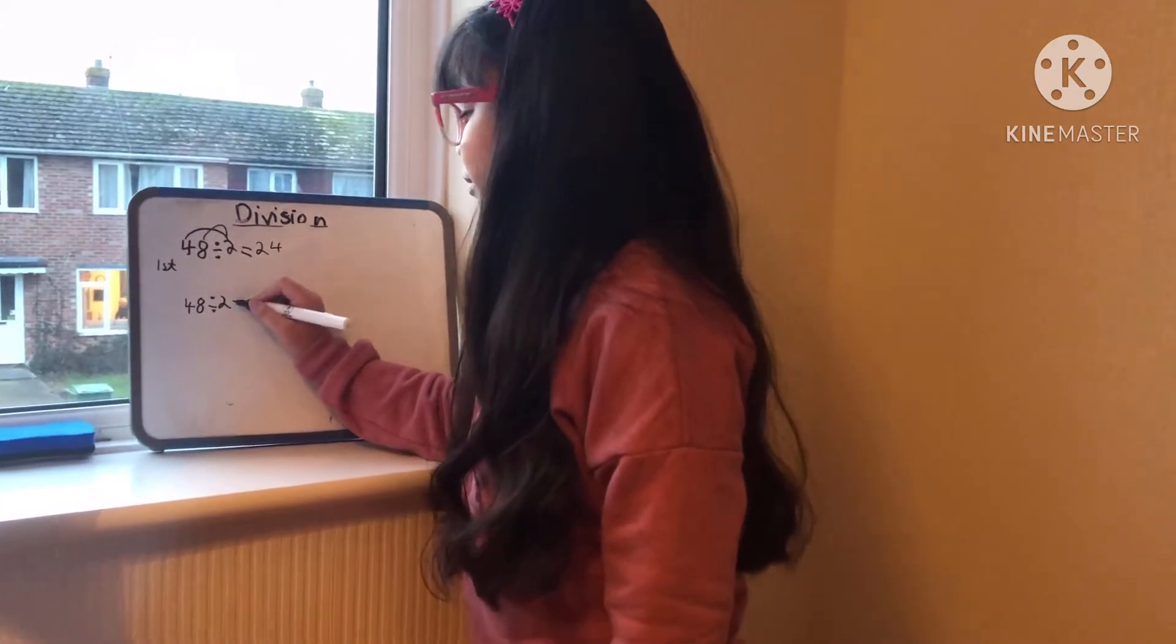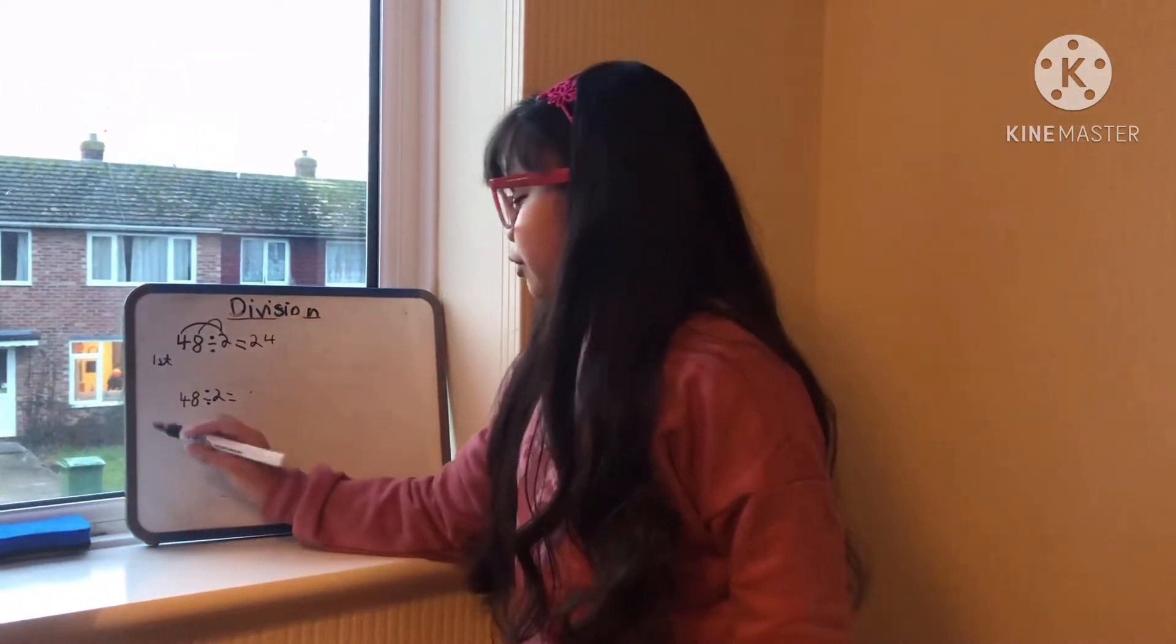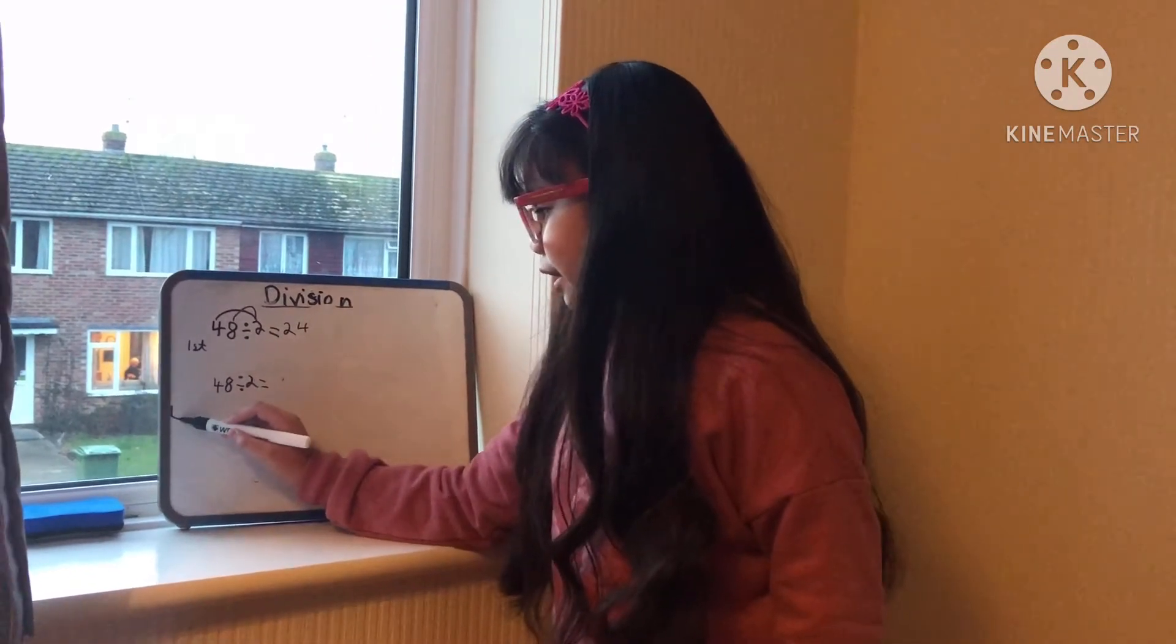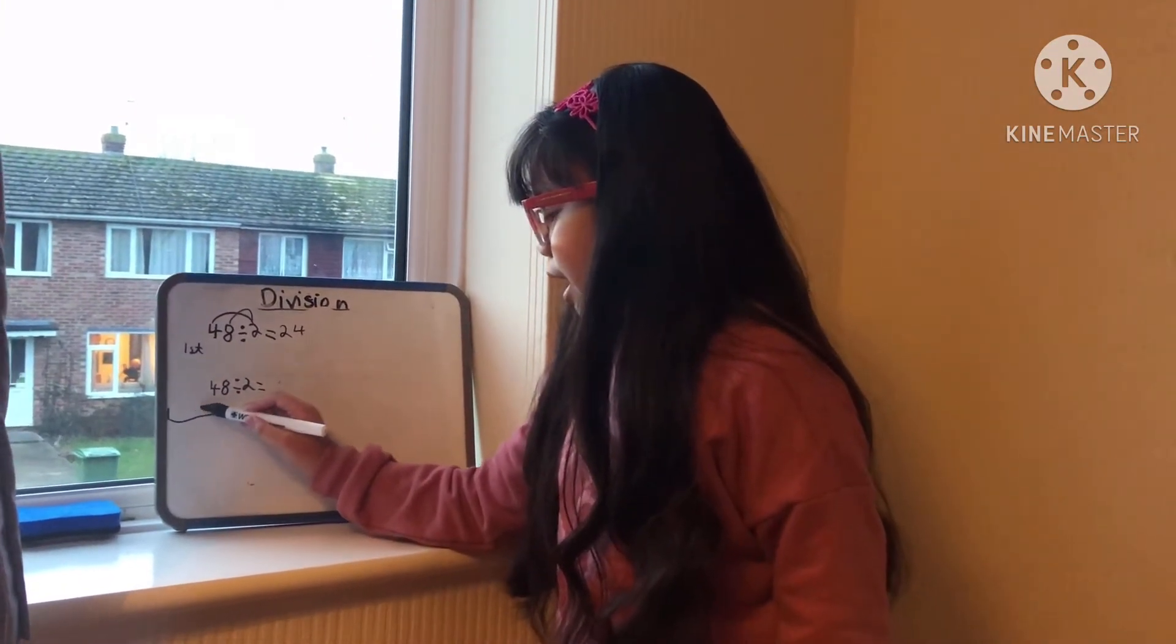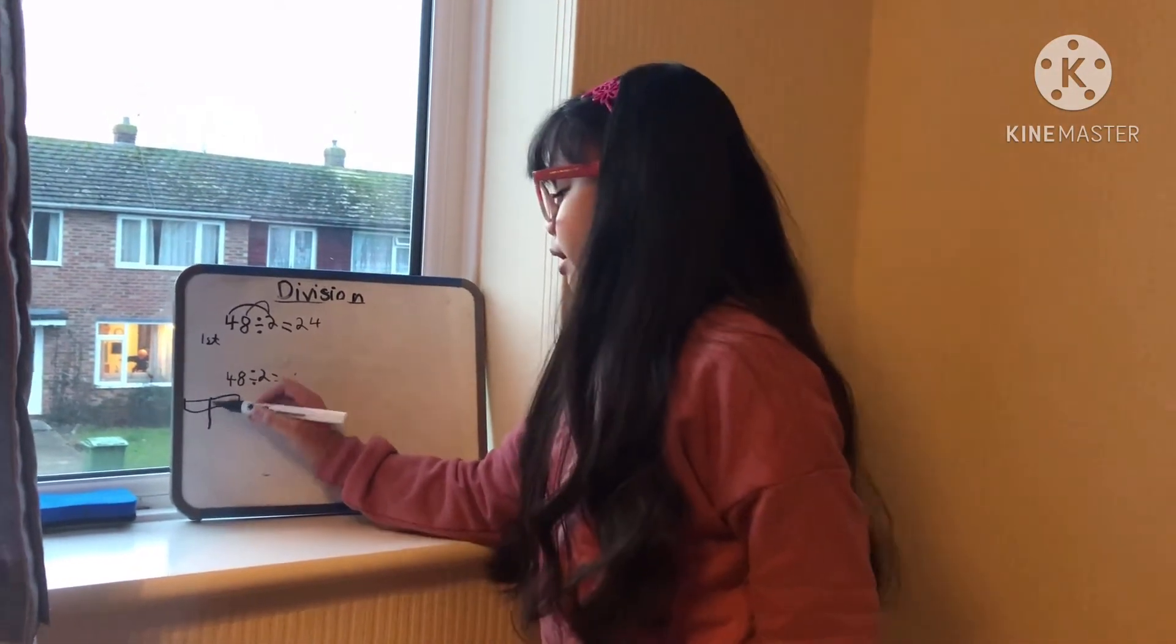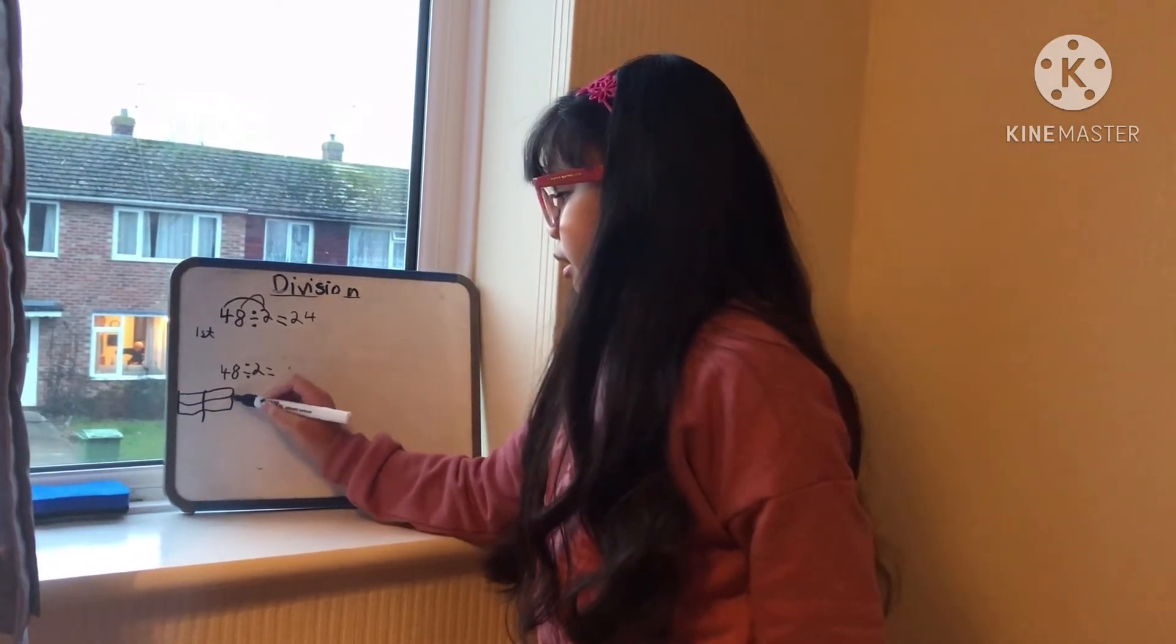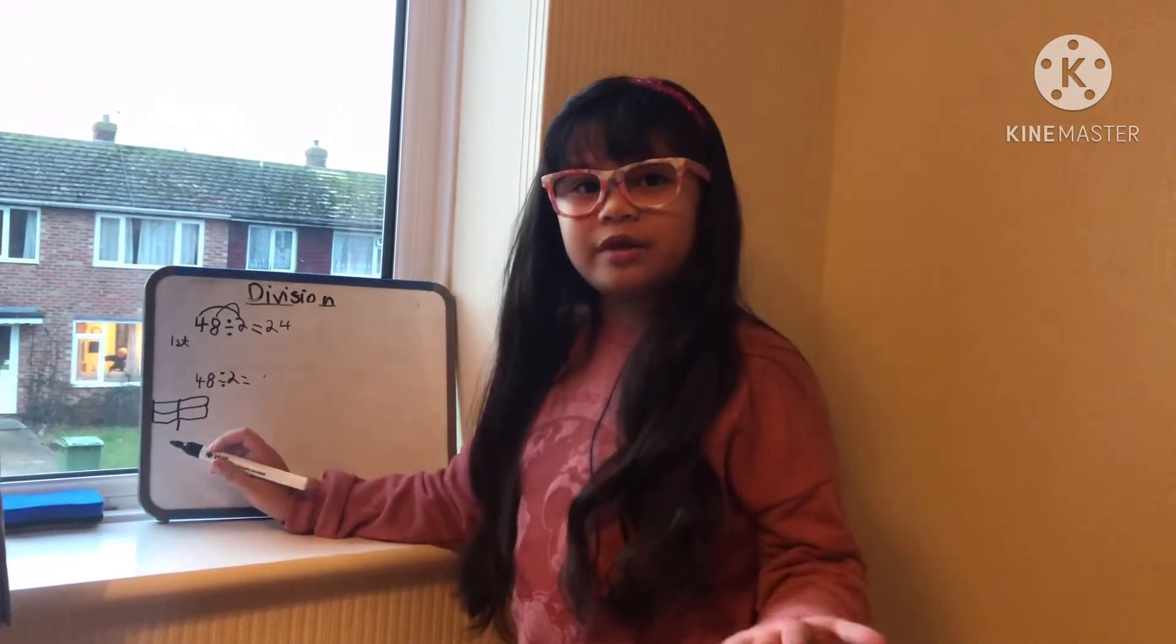So how we do it is we draw like this: we draw our tens and ones, we separate it in half, and draw it two times because later on we're going to share them equally.